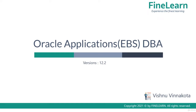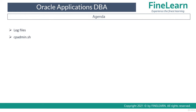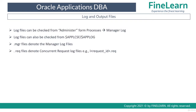In this lesson we'll be seeing about managing concurrent processing. First we'll be seeing about log files of concurrent managers and concurrent requests, then we'll see how to use cpedmin.sh. The log files of concurrent processing are very important. There are two types of log files: the first is the concurrent manager log files, and the second is the concurrent request log files.